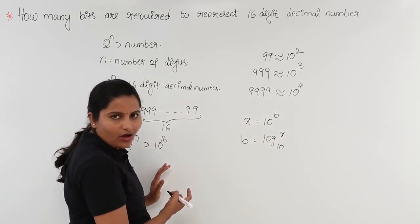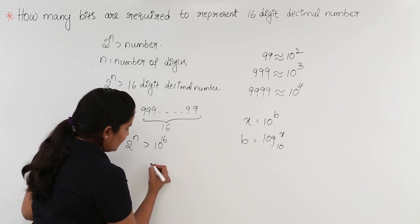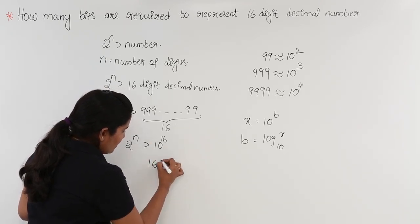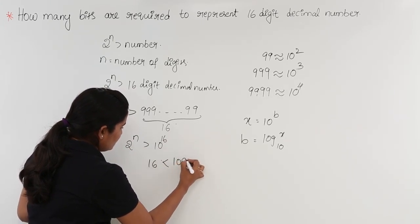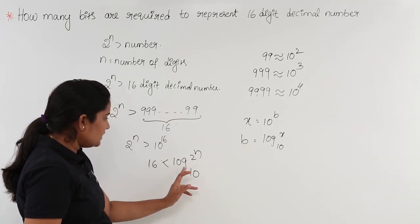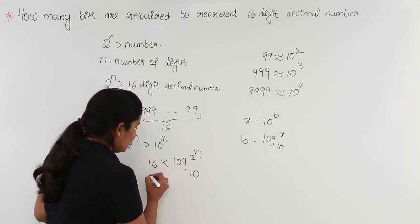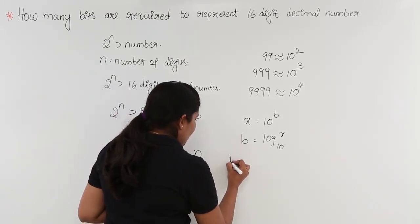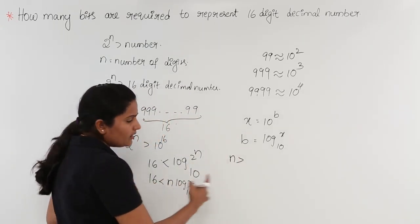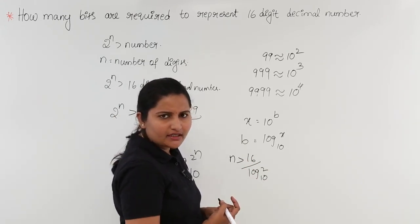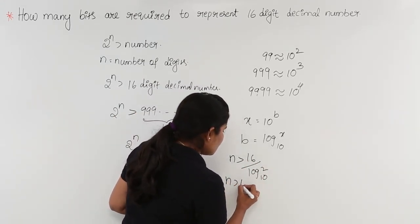Taking log base 10 on both sides: 16 is less than log of 2 power n base 10, which gives us 16 is less than n times log 2 base 10. To get n, we rearrange: n must be greater than 16 divided by log 2 base 10. The value of log 2 base 10 is approximately 0.3, so this gives n must be greater than 16 divided by 0.3.